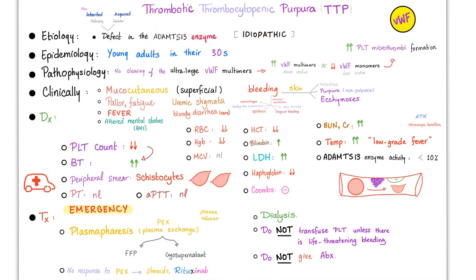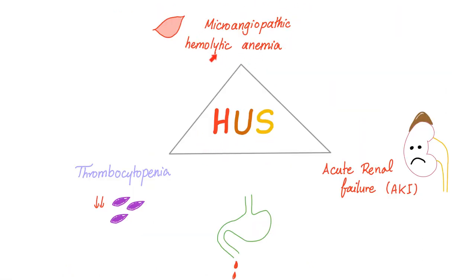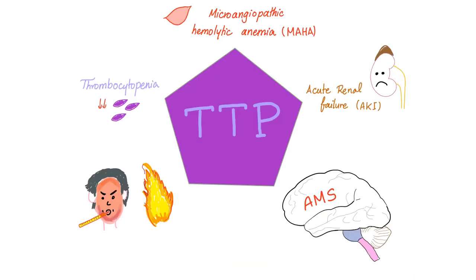Remember the ADAMTS13 defect. Remember, TTP is an emergency. Remember the pentad. Remember not to give platelets or antibiotics. Hemolytic uremic syndrome is a triad of microangiopathic hemolytic anemia, thrombocytopenia, and renal failure — that's the typical, diarrhea-positive, secondary HUS. But TTP is a pentad: microangiopathic hemolytic anemia, thrombocytopenia, acute renal failure, fever, and neurological symptoms, usually altered mental status.